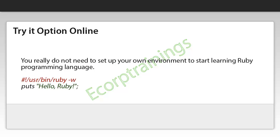You really do not need to set up your own environment to start learning Ruby programming language. The reason is very simple — we already have set up a Ruby programming environment online, so that you can execute almost all the tutorial examples online at the same time when you are doing your theory work. This gives you confidence in what you are reading and to check the result with different options. Feel free to modify any example and execute it online.